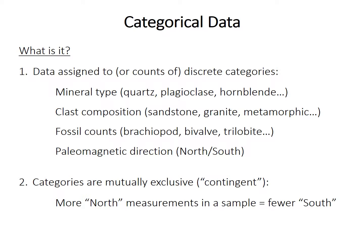Another property of categorical data is that the categories are mutually exclusive. Another way of saying this is that they're contingent. So a rock can't be both sandstone and granite, meaning more counts of sandstone in a sample of 100 rocks means you must have fewer granites. More north measurements means fewer south. The abundance of one category is contingent or dependent on the abundance of the other categories.